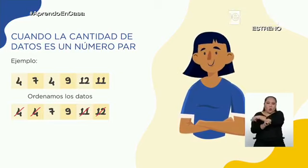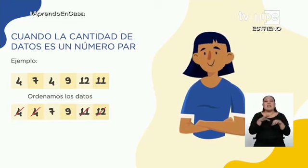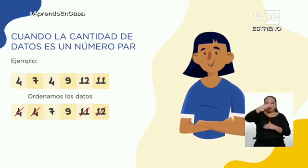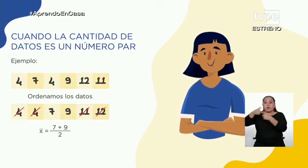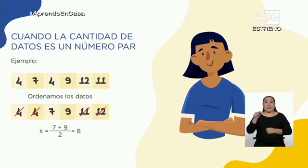La cantidad de valores es par. Realizamos un paso más: tenemos que calcular la media aritmética de los dos valores que están ubicados al centro. Así que vamos a tomar el 7 y el 9, los sumamos y dividimos entre dos. Así obtenemos como resultado el 8. ¡Listo! Ese es el valor de la mediana. Cuando el número de datos es par, el valor de la mediana es la media de los dos valores que están ubicados al centro.